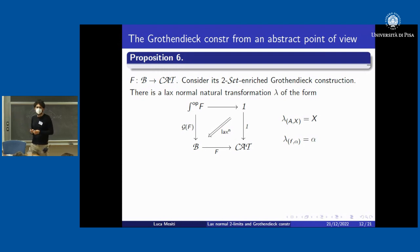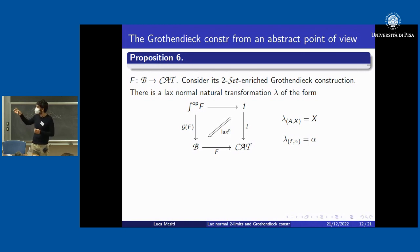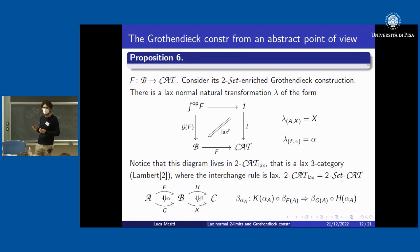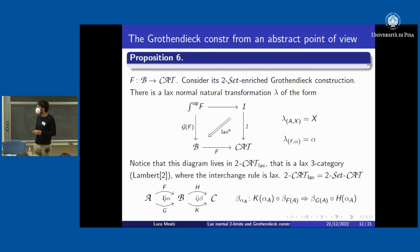Now we study the Grothendieck construction from a more abstract point of view. In dimension one we have an analog square presenting the Grothendieck construction of the category of elements as a comma object. The best we can have is a lax normal natural transformation in this square, so we are forced to go outside of strict 2-Cat. We must consider lax natural transformations as well, obtaining a lax Gray-category 2-Cat-lax: a category enriched over the one-category of two-categories and lax functors.